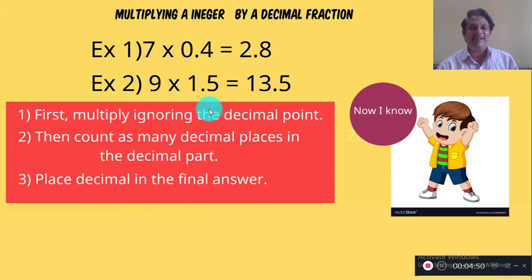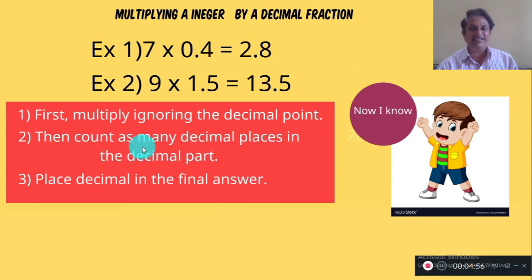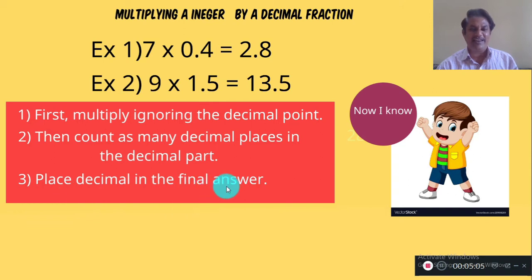The shortcut method has three steps. First, multiply ignoring the decimal point — multiply the two numbers directly. Then count how many decimal places are in the decimal part. And finally, place the decimal point in the final answer accordingly.